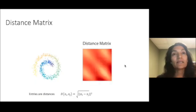The distance matrix is the first step in the diffusion map computation. Here again, we have a 2D Swiss roll dataset. The entries in the distance matrix are distances between pairs of points.